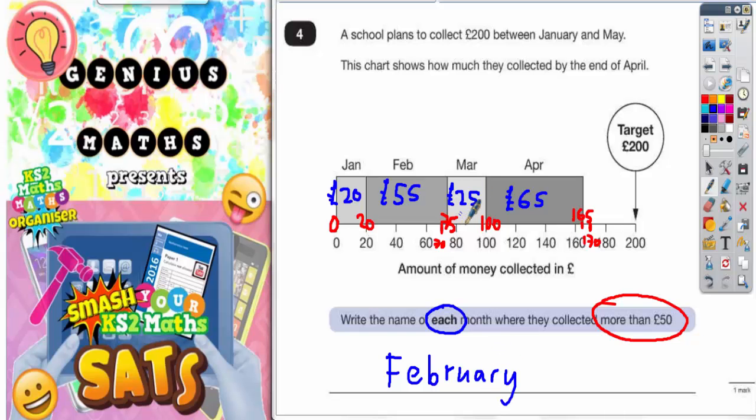£25 in March is not more than 50 so we're not writing that but £65 in April is more than 50. So April is the other month we need to write there.